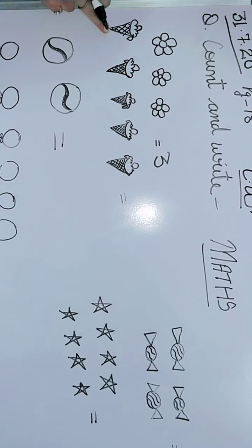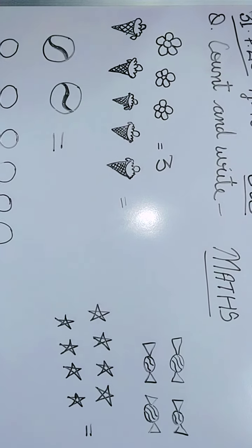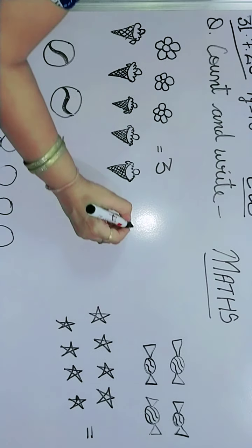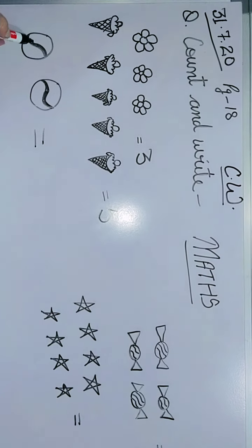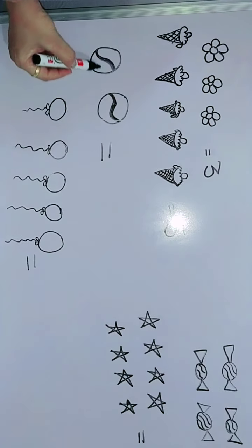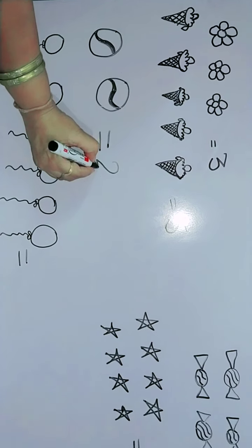Now there are ice creams. How many? 1, 2, 3, 4, 5. How many ice creams? 5. So you will write here 5. Balls, how many balls are there? 1, 2. So the answer is 2.